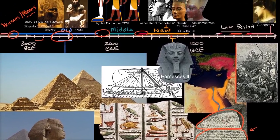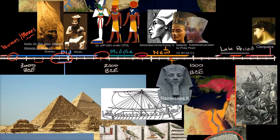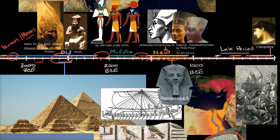Between the Old Kingdom and the Middle Kingdom is the first intermediate period, then the Middle Kingdom, then the Hyksos — Semitic people, referring to their language being of the same family as Arabic, Hebrew, or Aramaic — and then the New Kingdom. The New Kingdom is considered the peak of ancient Egypt, the height of their technology and military capability.